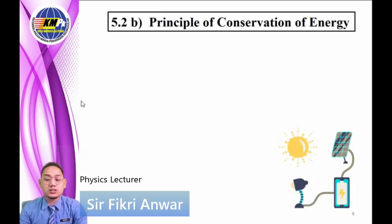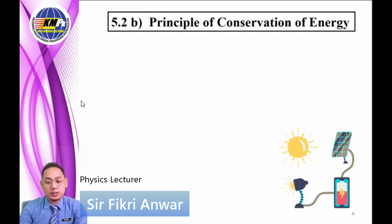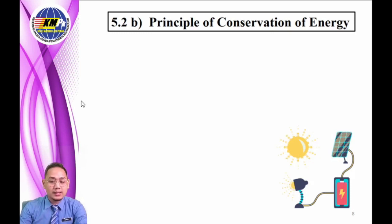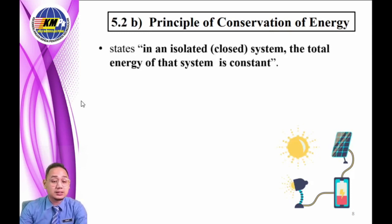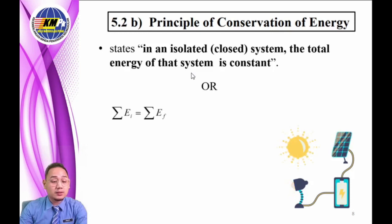The law of conservation of energy states that energy can neither be created nor destroyed. Its principle states that in an isolated or closed system, the total energy of that system is constant. By equation, this can be written as: total initial energy equals total final energy.